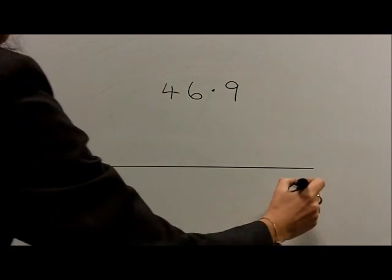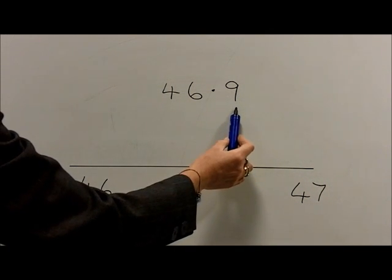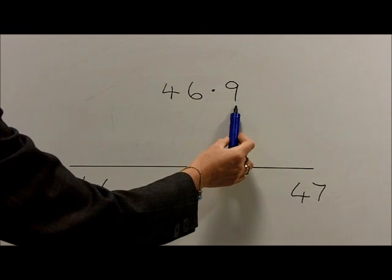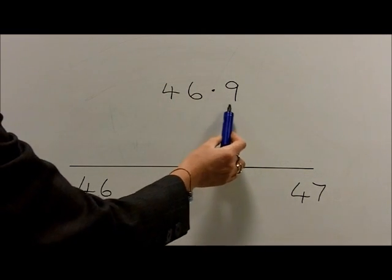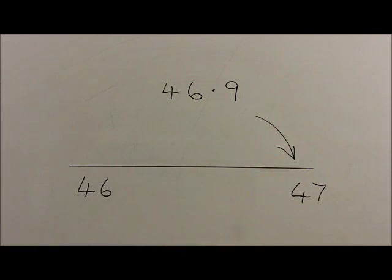With the number 46.9, the two whole numbers that 46.9 lies between are 46 and 47. Again, we look at the digit in the tenths to make our rounding decision. With this number being 9, the number will round up. So 46.9 rounds up to 47.